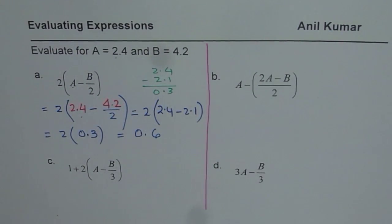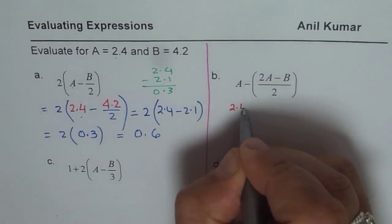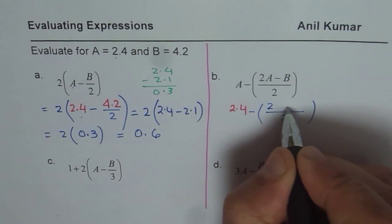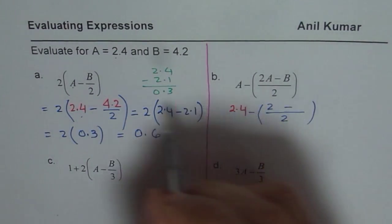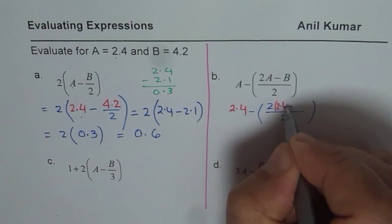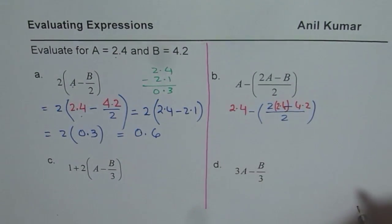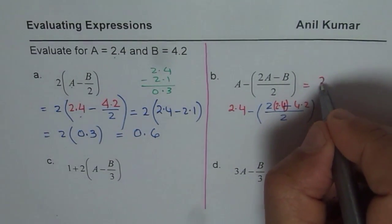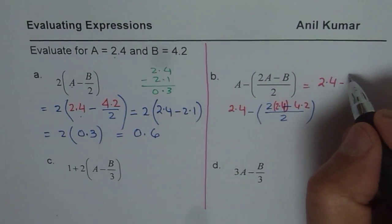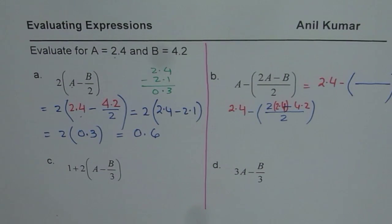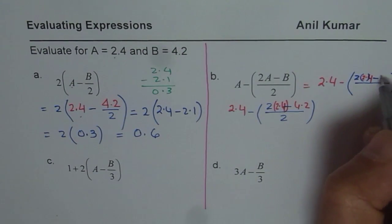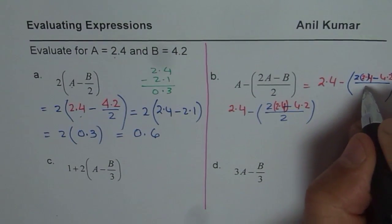So let us replace A with 2.4 and B with... we have got 2.4 minus within bracket, we are dividing something by 2. So I am replacing only A and B with red ink. So A is 2 times 2.4, so I will write this in bracket 2.4. And B is 4.2. So we have 2.4 take away, within brackets, 2 times A which is 2.4 minus 4.2 divided by the number 2 itself.